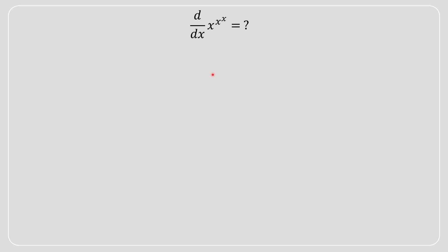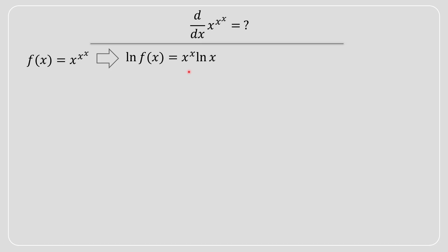Before we begin, please drop a like and subscribe. I'll show you how to solve this very abstract-looking problem in a few easy steps. The first step: we know that f(x) is equal to x to the power of x to the power of x. The plan we'll be applying is to use logarithmic and implicit differentiation — that's the quickest and easiest way to do it.